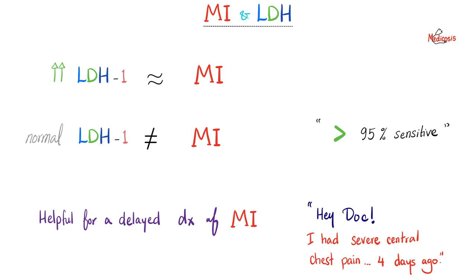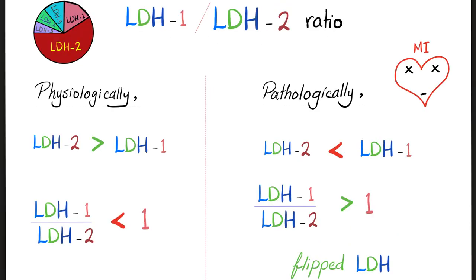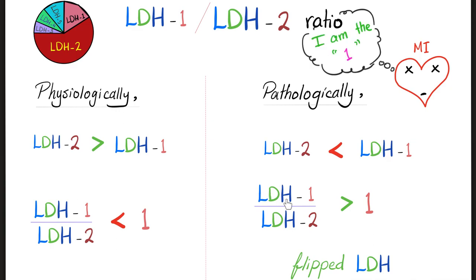The LDH1 to LDH2 ratio is one of the most important ratios in medicine. Normally, LDH2 is greater than LDH1 — about 35% of total LDH is LDH2 — so the LDH1/LDH2 ratio is less than 1. But in myocardial infarction, LDH1 elevates and exceeds LDH2, making the ratio greater than 1. In other words, the LDH has flipped — this is the flip.